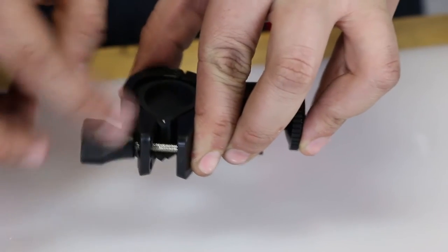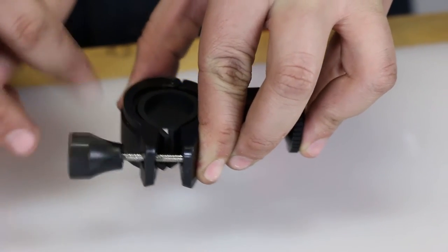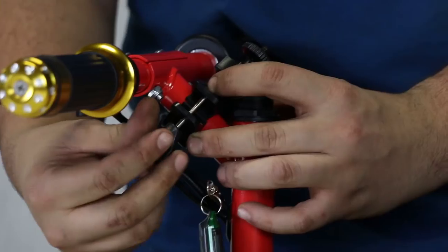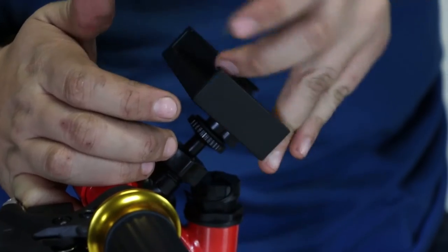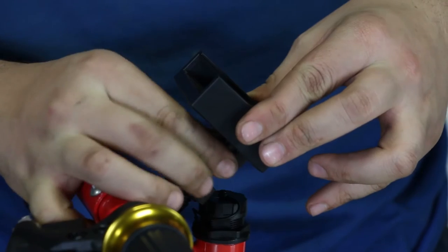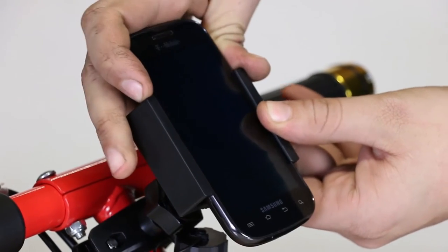To install the phone holder, twist the bolt to open the clamp. Mount it anywhere on the handlebar and twist the bolt to close the clamp. Twist the phone holder in place and tighten the knob to secure it. Simply slide the retractable side on the holder and place your phone in the middle.